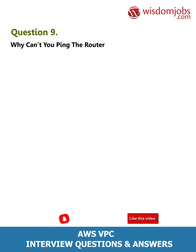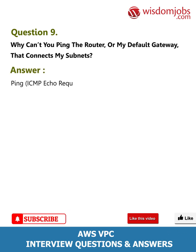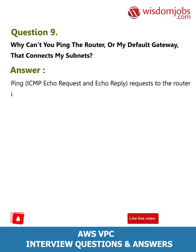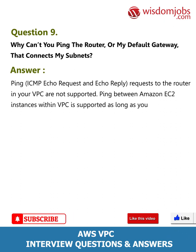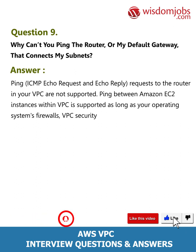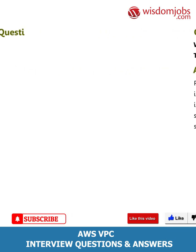Question 9: Why can't you ping the router or my default gateway that connects my subnets? Answer: Ping (ICMP echo request and echo reply) requests to the router in your VPC are not supported. Ping between Amazon EC2 instances within a VPC is supported, as long as your operating system's firewalls, VPC security groups, and network ACLs permit such traffic.